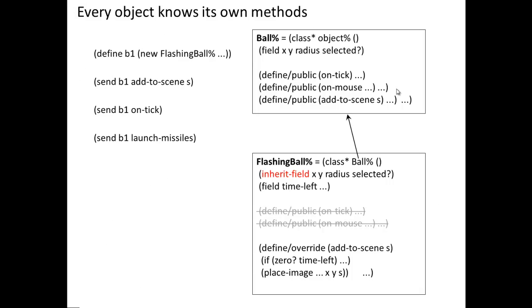Similarly, every object knows its own methods. Let's think about FlashingBall. If I define B1 to be a new FlashingBall, here's FlashingBall.